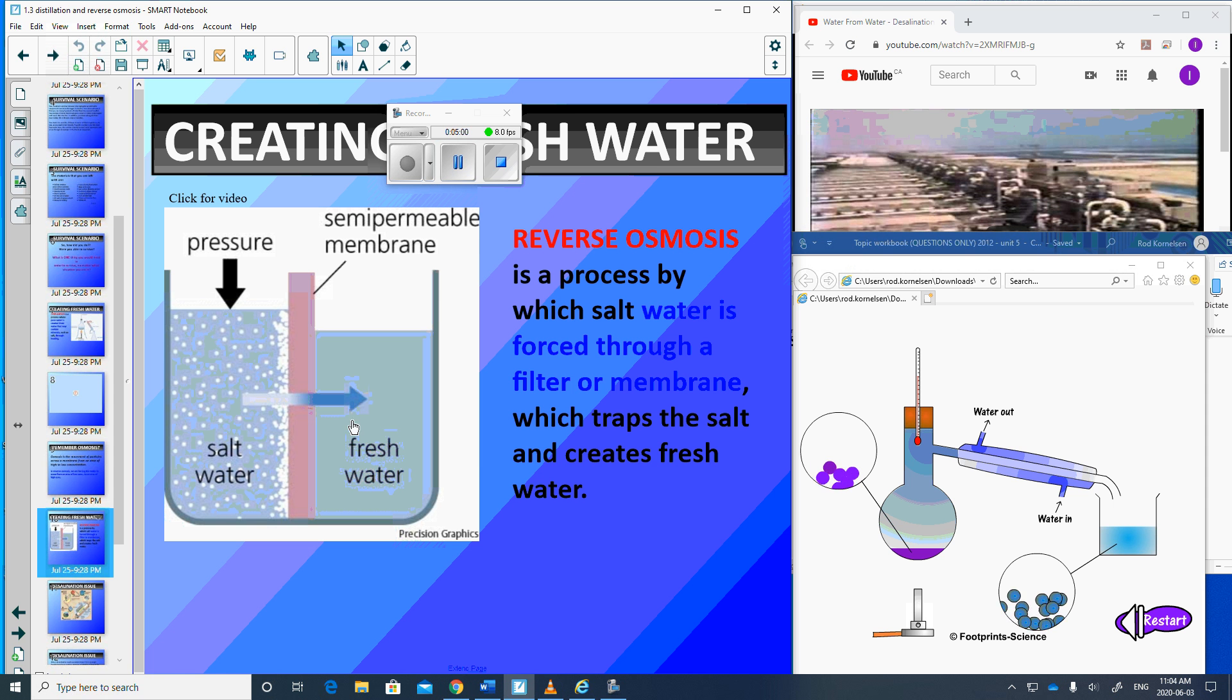By normal osmosis, the water right here would actually move across this membrane because there's a higher concentration of salt. That means higher concentration of water in the fresh water. Normally, osmosis would mean the water moves into the salt water. Reverse osmosis means we add pressure here that will push the water through a screen.